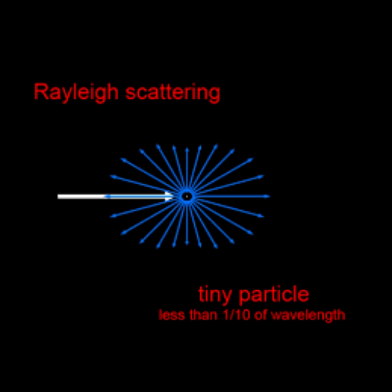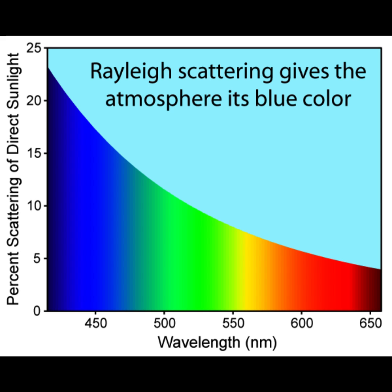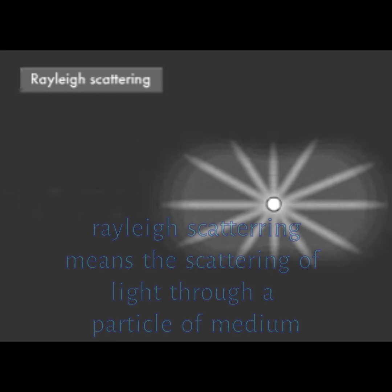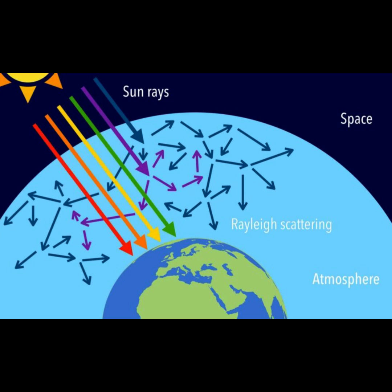that the sky is blue in color. Rayleigh scattering means the scattering of light by particles in a medium without change in wavelength. Hence the sky is blue in color. Thank you.